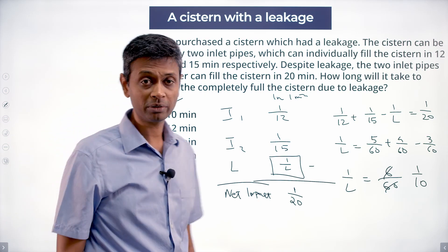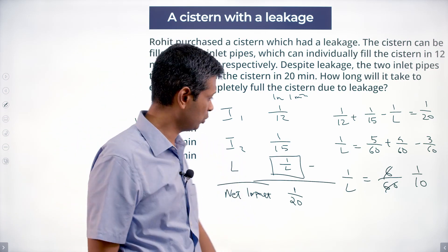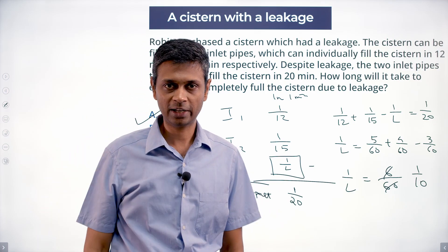One by twelve plus one by fifteen minus one by L is equal to one by twenty. Solve it, simplify it, we get it.